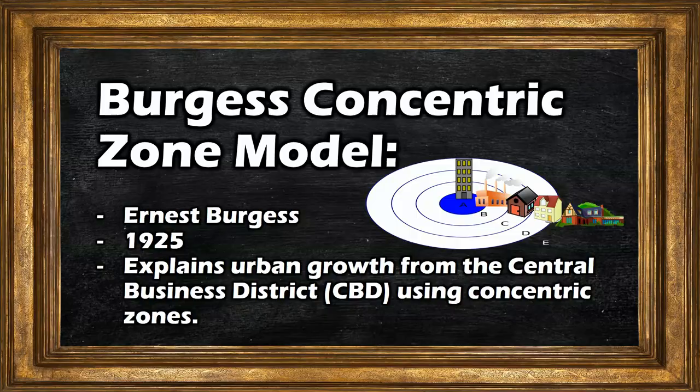Hey students. Recently I started a series of videos centered on urban development models. My first video discussed the Burgess concentric zone model and explained how Ernest Burgess suggested that cities like Chicago form from the center outward, forming circular rings called zones that attempted to explain how people use urban space based on their economic needs and wants. In this video we will look at another model that attempts to do the same thing: the Hoyt sector model.